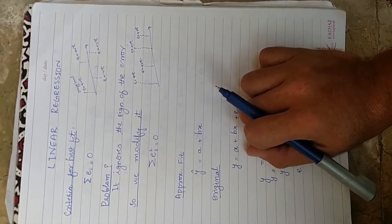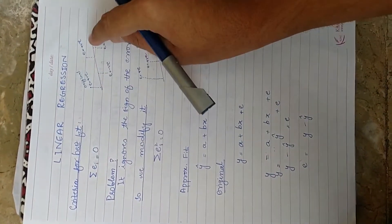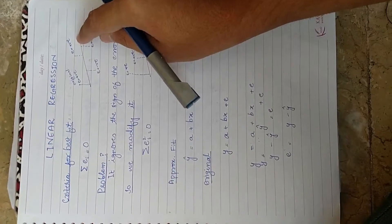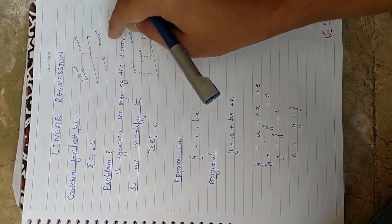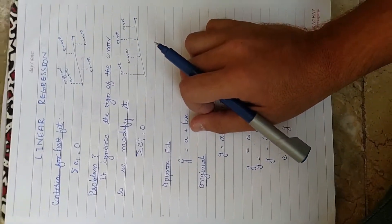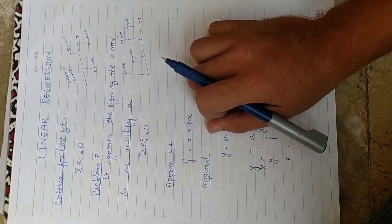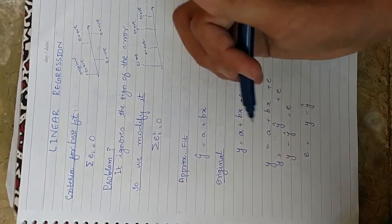When we draw this line, there is always some error. Now, the criteria for best fit is that summation of error equals zero. What is the problem here?